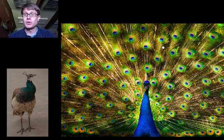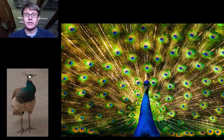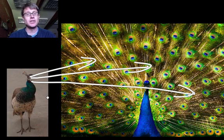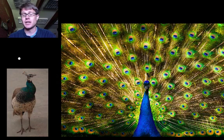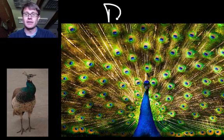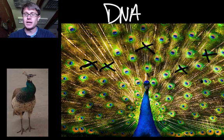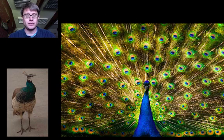Why does a peacock have that beautiful train? It's just going to get in the way — but it's doing that to impress the mate. The female only chooses a peacock with a really big train, because it's a clear indication of the health of that mate. If you can make a beautiful train, you probably have good DNA. Studies where researchers cut off some of the eye feathers found that peahens would actually ignore those males. They also found that males with a beautiful train produce offspring more likely to survive.